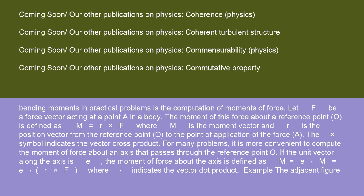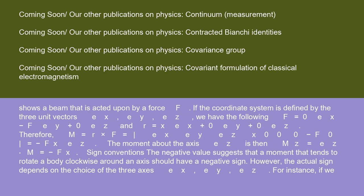Example: the adjacent figure shows a beam that is acted upon by a force F. If the coordinate system is defined by the three unit vectors ex, ey, ez, we have the following: F = 0·ex - F·ey + 0·ez, and r = x·ex + 0·ey + 0·ez. Therefore, M = r × F = |ex ey ez; x 0 0; 0 -F 0| = -Fx·ez.